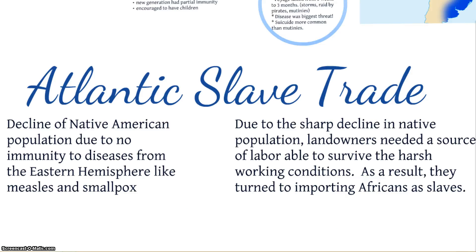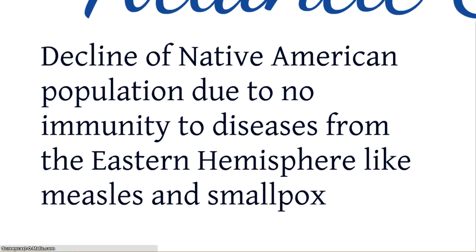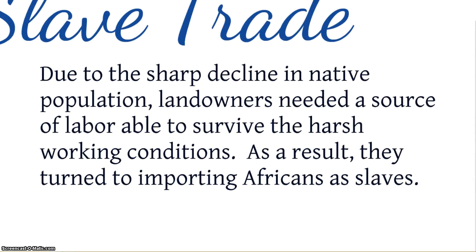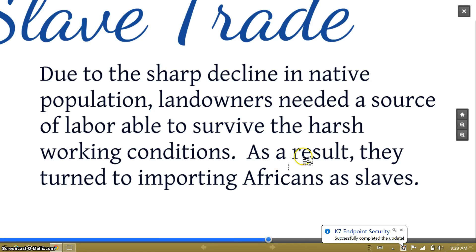This is where we start talking about the Atlantic slave trade. There is a decline of Native American population due to diseases from the Eastern Hemisphere — like measles and smallpox — to which they had no immunity. Due to this sharp decline, the encomiendas and landowners needed a source of labor to survive the harsh working conditions, and as a result they turned to African slaves.